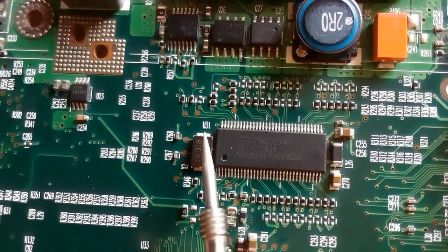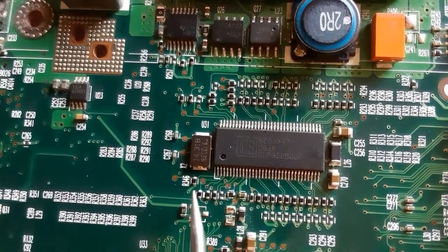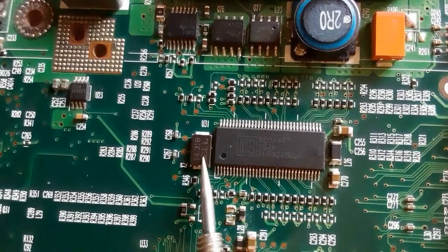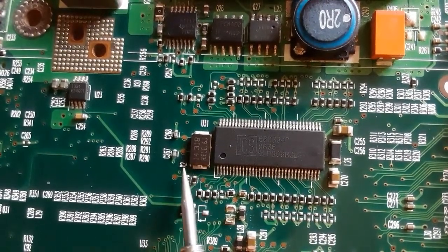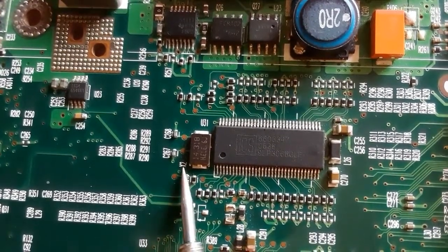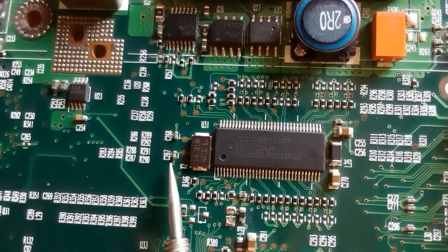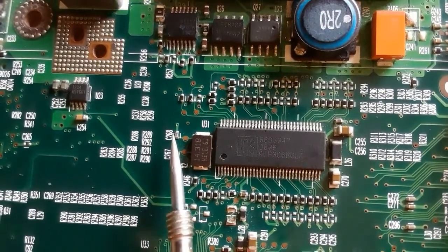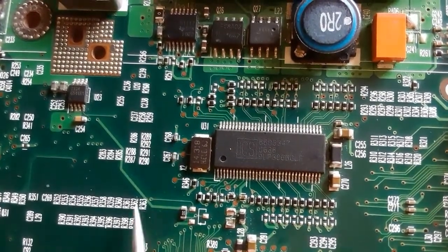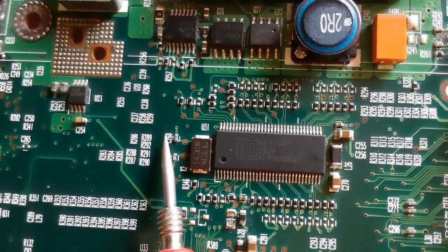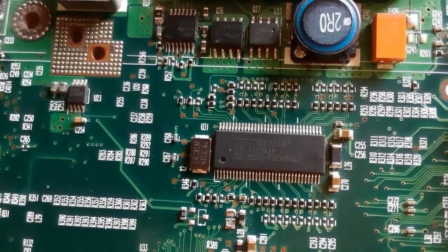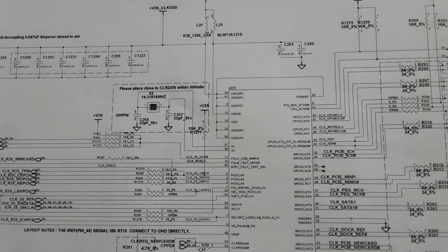Here in the motherboard, as you can see, this is the clock generator IC with reference U-31. Here we have the crystal X2 — the same as we saw in the schematic. And over here we have the two capacitors: C267 and C268. So the crystals are responsible for generating the frequency for the motherboard.